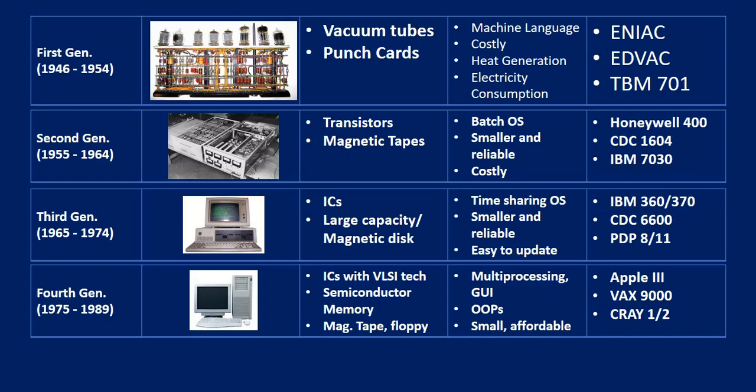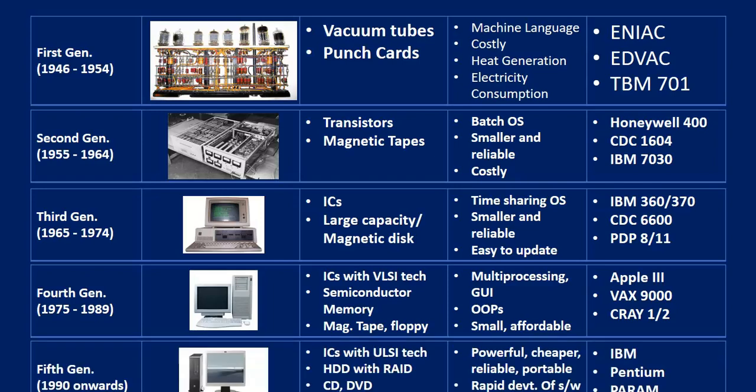Computers in the fifth generation used Ultra LSI technology, hard disk, RAID technology, DVD, CD, Blu-ray. They are powerful, cheaper, reliable, portable, and rapid to develop software. IBM Pentium and workstations are the major players in the fifth generation.